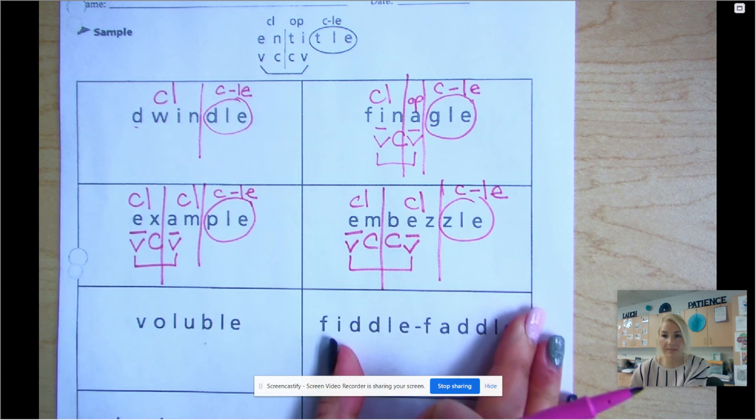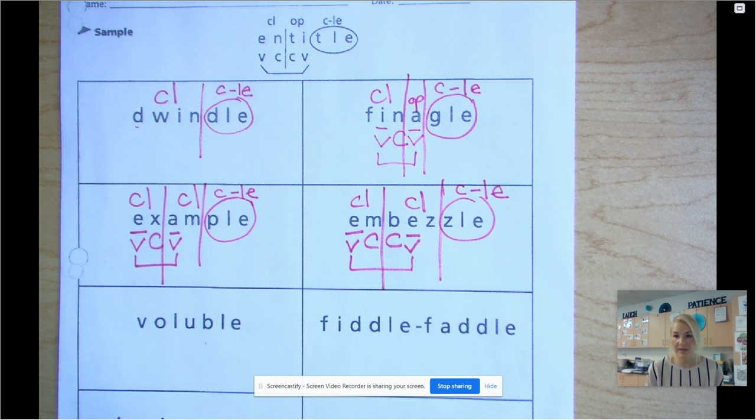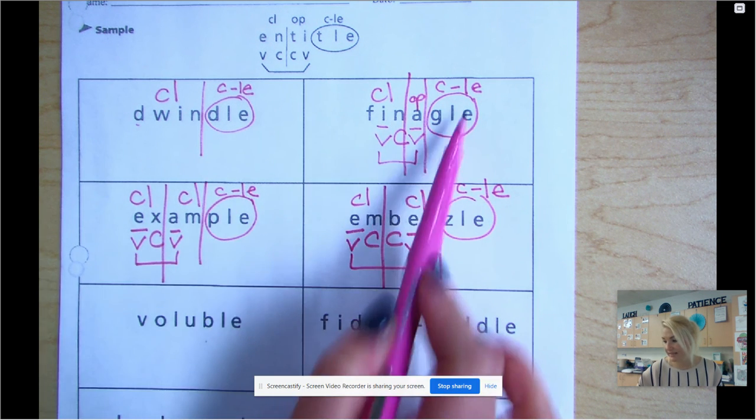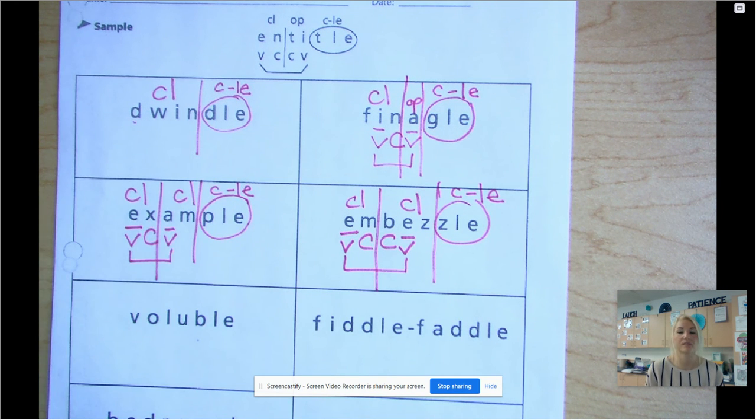So that is a sample of how we syllabicate words with consonant L-E. It works similar to a magic-E and also the suffix ending, where it's a shortcut. We have less to syllabicate now. And a consonant L-E is different than a magic-E. Remember, a magic-E makes the vowel say its name. These end in L-E's, and these consonants, of course, don't say their name. So there is a difference.